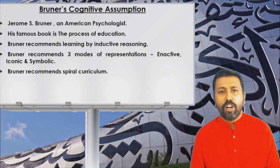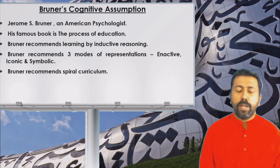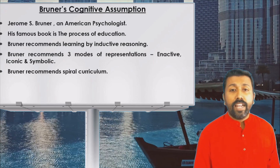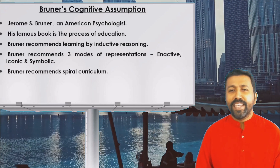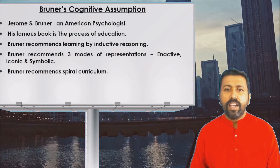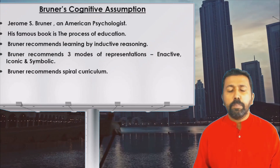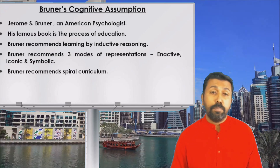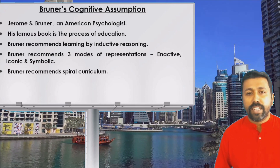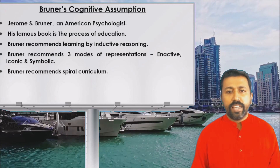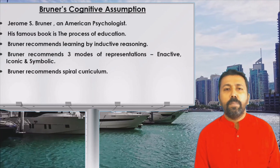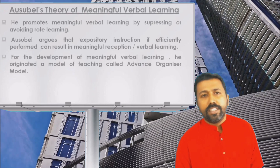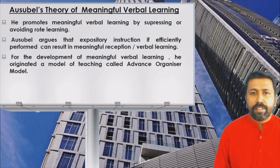Another important contribution is by Jerome Bruner, an American psychologist. His famous book is 'The Process of Education.' He recommends learning by inductive reasoning and gives three important modes of representation: enactive, iconic, and symbolic. The change in behavior happens through these three representations. He also recommends a spiral curriculum, which helps the learner with continuity — connecting present learning with past learning.